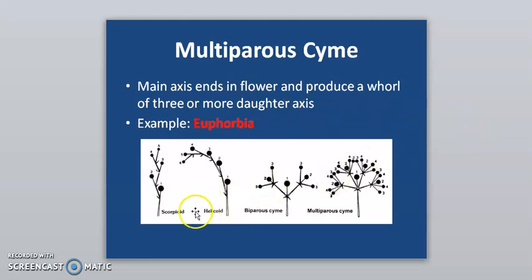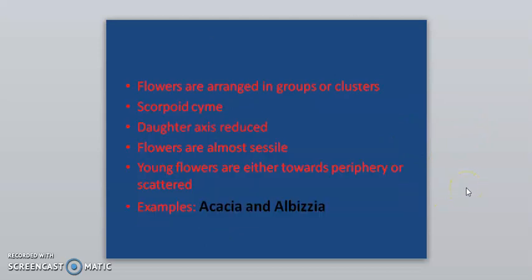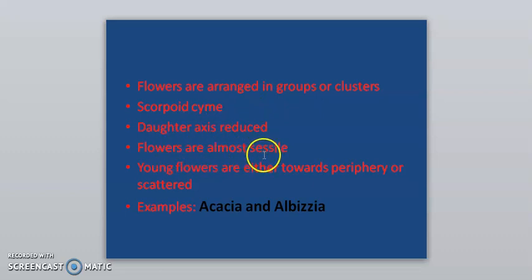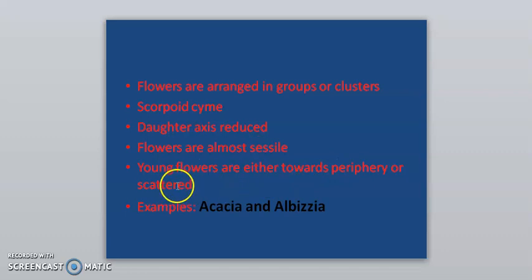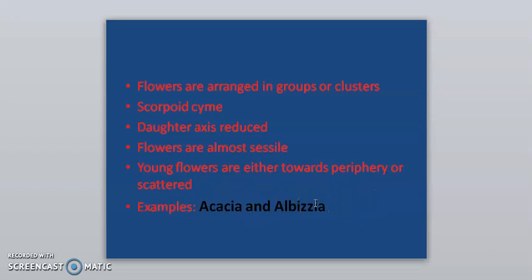This diagram shows the different types of cymose inflorescence. In scorpioid cyme, daughter axis reduced plots are almost the same size, and younger ones are either towards the periphery or scattered — example is Acacia or Albizia. These are the characteristics found in cymose head.